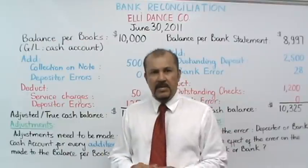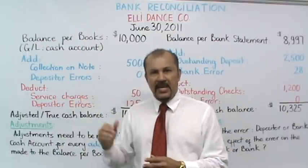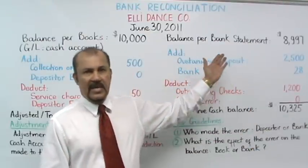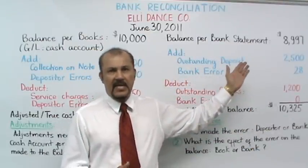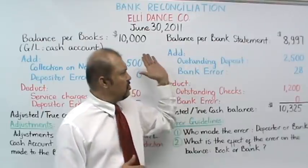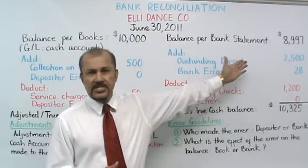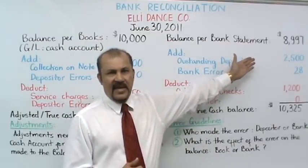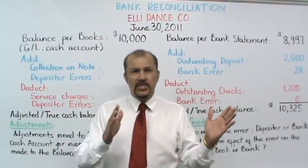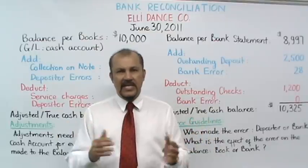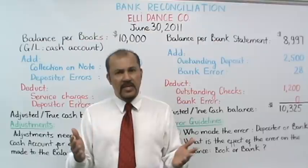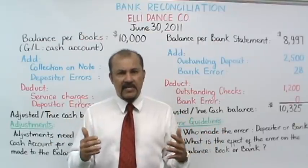So Ellie Dan's company has one cash balance as per her books. Ellie also gets a bank statement from her bank that shows how much money she has in her bank account as of the same date, June 30th. In this case, her bank balance reflects a balance of only $8,997. So two balances for Ellie Dan's company as of the same period, June 30th. The question then is: which of these balances is correct?